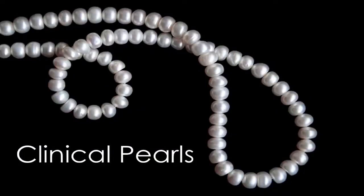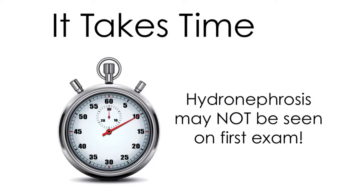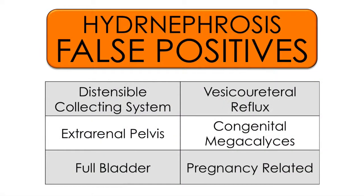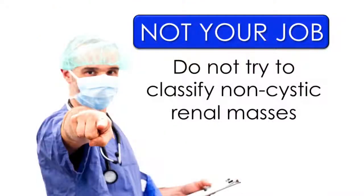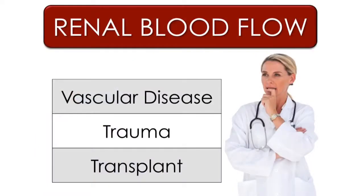Here are a few clinical pearls for renal ultrasound. There is usually a delay of about one hour between the time that ureteral obstruction first occurs and visual evidence of ureteral obstruction is seen on ultrasound. If your first exam is normal, consider providing analgesia and hydration to see if hydronephrosis can be seen on subsequent exams. There are a number of false positive causes for hydronephrosis seen by ultrasound, which must be kept in mind when entertaining this diagnosis. With regard to solid renal masses, it is clearly beyond the scope of most clinical physicians to use ultrasound to classify non-cystic renal masses — the bottom line is to get a CT scan when these masses are seen. If vascular disease, trauma, or transplant rejection affecting renal blood flow are being considered, you could use Doppler color technology to look for the presence of renal blood flow.